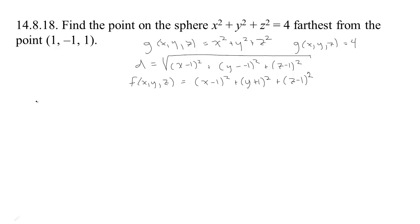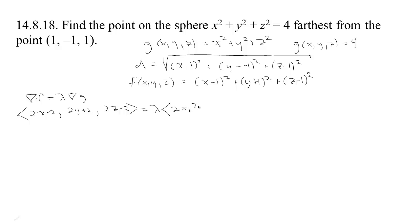As big as possible subject to this constraint. The condition to have an extreme point is that the gradients have to be aligned. The gradient of f is (2x-2, 2y+2, 2z-2). That has to be some scalar λ times the gradient of g, which is (2x, 2y, 2z). These give three equations: 2x - 2 = 2λx, and 2y + 2 = 2λy, and 2z - 2 = 2λz.